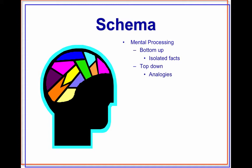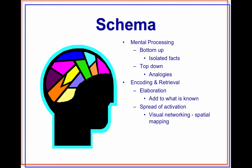Next, we'll look at encoding and retrieval. There are three processes discussed by Gagné in 1985. The first is elaboration — the idea that as we learn, we add to what's already known. The second is the spread of activation — we actually create a spatial map of all the information that we have. Next is organization, where we intentionally shape the information into meaningful parts.